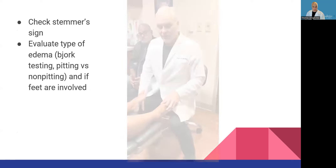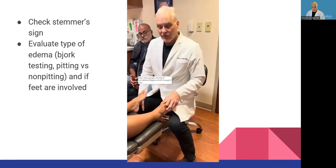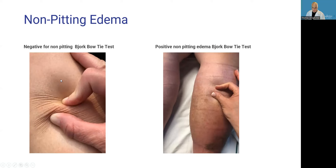Checking for a Stemmer sign starts with the feet — we pinch on the top of the foot. The ability to pinch on the top of the foot is called a negative Stemmer sign. It's right at the base of the toe. We also evaluate for edema: there's pitting edema and non-pitting edema. Non-pitting edema is best recognized by the Bjork test or bow tie test — you pinch and twist the skin and it should crinkle. That's normal, consistent with no pitting edema. If it doesn't crinkle, that's non-pitting edema, and that's what we see in lipedema.